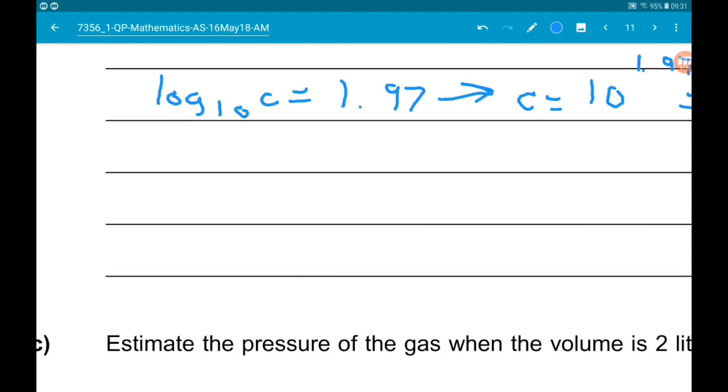So d, being the gradient, is difference in y, so 2.4 minus 2, over difference in x, so that's going to be minus 0.305 minus minus 0.02, so that's add 0.02.